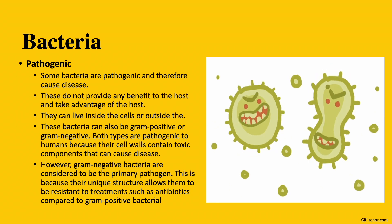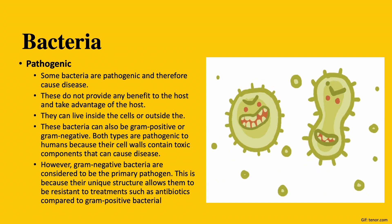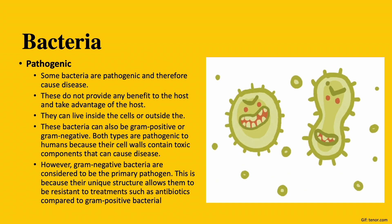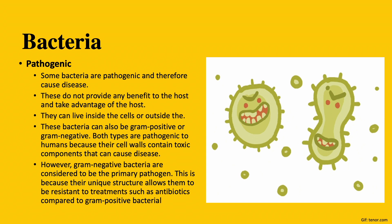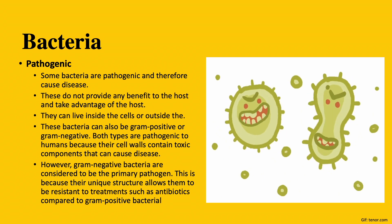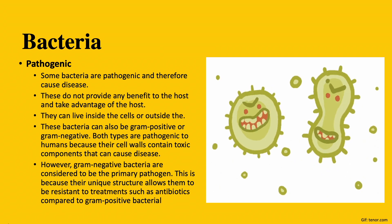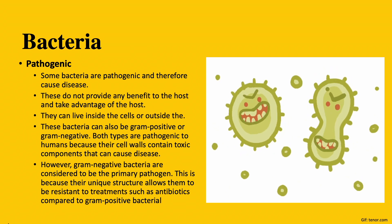Some bacteria are pathogenic and therefore cause disease. These do not provide any benefit to the host and take advantage of the host. They can live inside the cells or outside the cells; if the former, they are called intracellular. These bacteria can also be gram positive or gram negative. Both types are pathogenic to the human body because their cell walls contain toxic components that can cause disease. For instance, they play a central role in the pathogenesis of bacterial septic shock in humans, a lethal condition that involves the collapse of the circulatory system and multiple organ failure. However, gram negative bacteria are considered to be the primary pathogen, because of their unique structure that allows them to be resistant to treatments such as antibiotics.